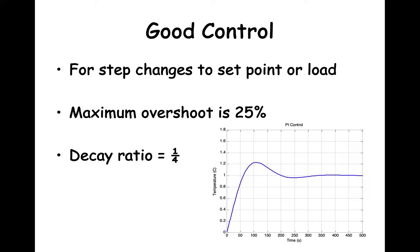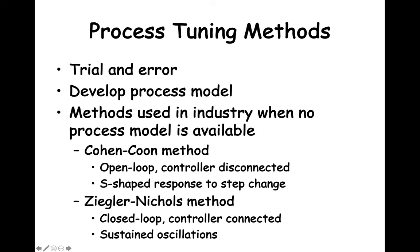With good control, the output will return to be within process tolerance limits fairly quickly. Now that we have some dynamic performance limits, how do we find values of Kp, tau i, and tau d that will produce good control?